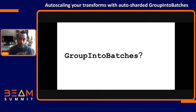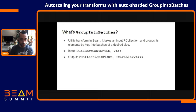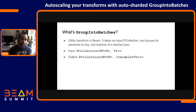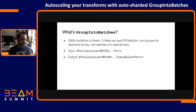So first of all, what is this Group into Batches thing? Group into Batches is a utility transform in Beam. It's most often useful for streaming pipelines. What it does is it takes in a PCollection of key-value pairs, and it outputs a collection of key-value pairs where the values from the input are grouped into batches. You can tell it the desired size of the batches that you want to include.